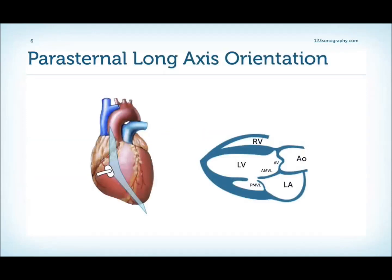The first view we can get from the parasternal window is the parasternal long axis. This view cuts the heart in a longitudinal direction, giving us a view where we have the left ventricle, the right ventricle, the aorta, the left atrium, the posterior mitral valve leaflet, the anterior mitral valve leaflet, as well as the aortic valve.